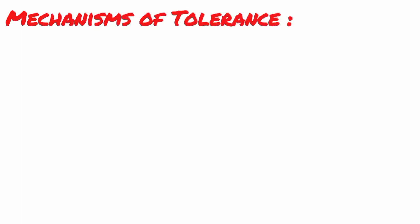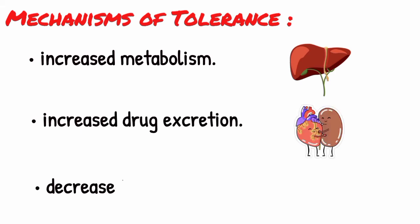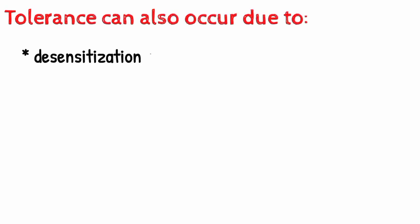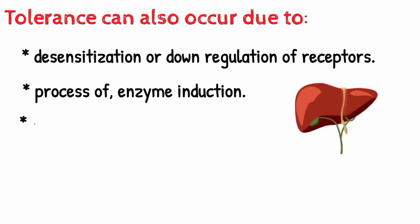There are three main mechanisms responsible for tolerance: increased metabolism, increased drug excretion, and decreased intestinal absorption. Tolerance can also occur due to desensitization or down-regulation of receptors, which decreases the sensitivity of that particular receptor, as well as by enzyme induction and homeostatic response.